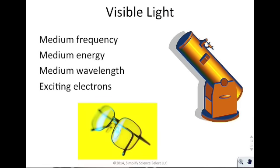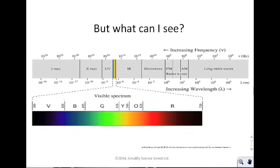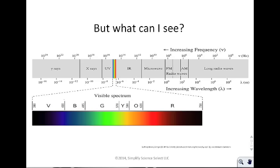Visible light is the one you should be most familiar with. It's in the middle of the spectrum — it has medium frequency, medium energy, medium wavelength — and it can be used to excite electrons. The red, blue, green light we see is actually a very, very small part of the electromagnetic spectrum.